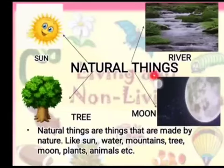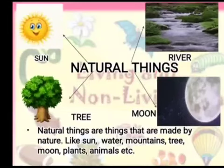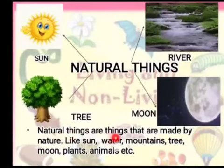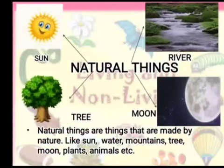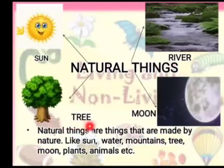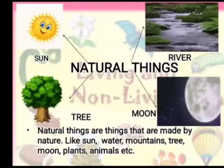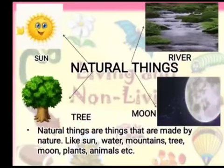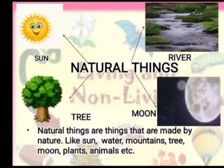Natural things are the things which are gifted to us by nature, or we can say which are made by nature — like sun, river, tree, moon. These all things are gifted to us by God, so we call them natural things.